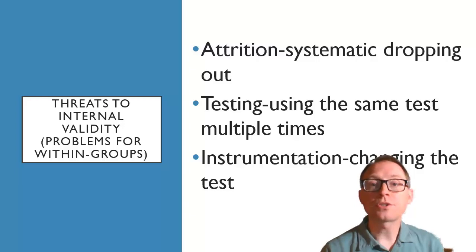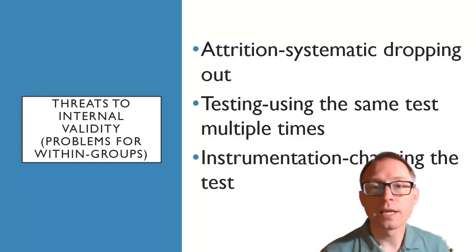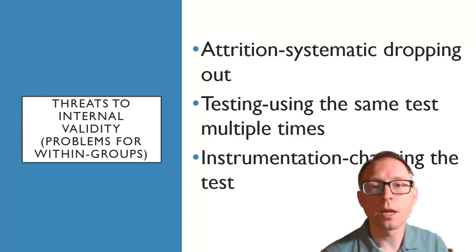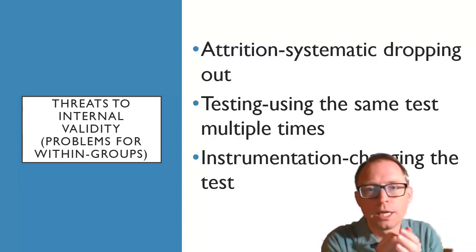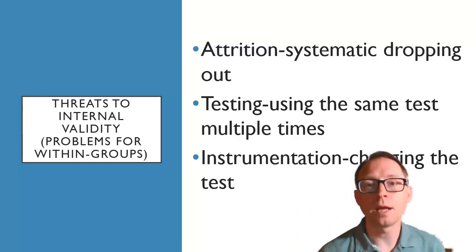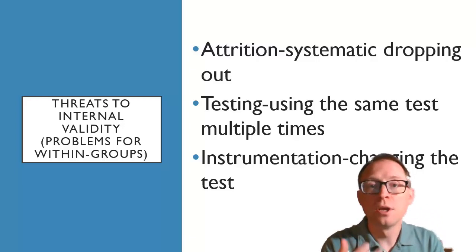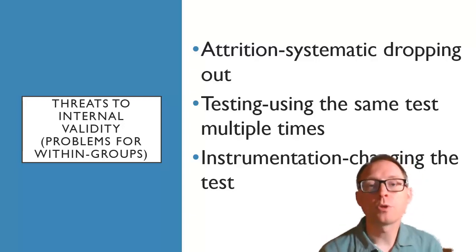Instrumentation is when the instrument — meaning the test — changes over time. Maybe the way I gave the test in January was a little different than in April. For example, in January I gave you the test in person and it was really cold in the room, making you less happy. But in April I didn't have time, so I sent a Qualtrics survey online, it's warm outside, and you're feeling happier. The test changed over time — it's not that you were actually happier, it's that the change in instrumentation led you to change your answers, causing me to reject the null when I shouldn't have.